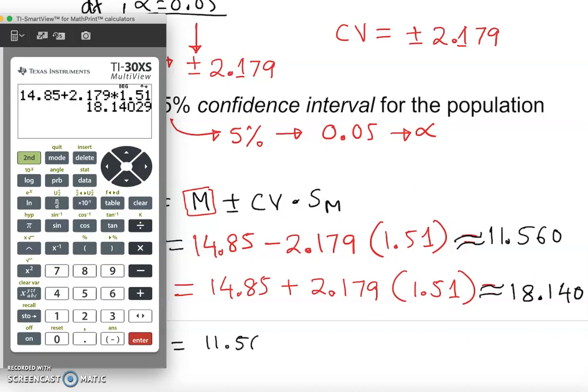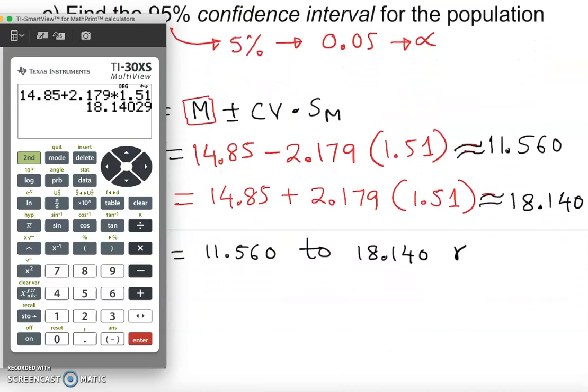11.560 to 18.14, or we can say 11.560 comma 18.14. How do we interpret? We can say we are 95% confident that our true population mean is going to fall between these two. We are 95% sure. That's how we find the confidence interval.